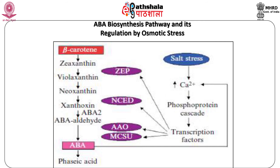ABA is synthesized from beta-carotene via the oxidative cleavage of neoxanthin and conversion of xanthoxin to ABA via ABA aldehyde. Stresses including salinity stress stimulate ABA biosynthesis and accumulation by activating genes involved in the ABA biosynthesis pathway, which itself could be mediated by a calcium-dependent phosphorylation cascade. ABA can also upregulate the expression of ABA biosynthesis genes via the calcium signaling pathway.